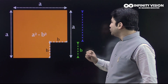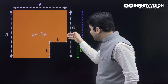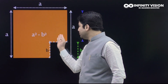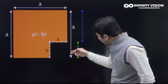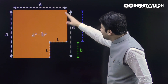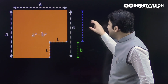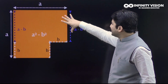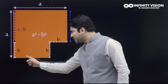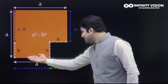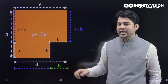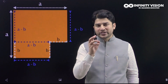Now if I ask you what is the length of these two unknown sides of the hexagon — the remaining four sides we already know as a, a, b, b. This complete square had side a and the smaller square had side b, so this unknown side is the big length minus the small length, which is a - b. Similarly, the other unknown side — since the complete length is a and the small length is b — is also going to be a - b.